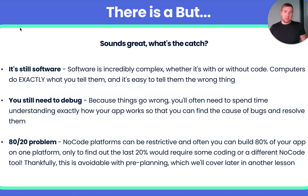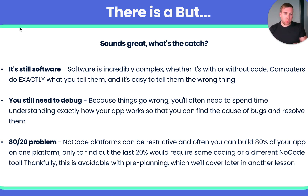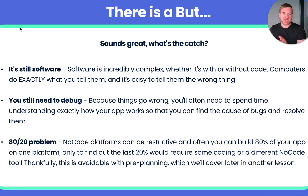Now there is a catch. Even though NoCode takes care of all those things, software is still incredibly complex. Computers will literally do exactly what you tell them — and that's a key phrase to internalise, especially when the computer is doing something you don't expect. The computer has no way of knowing if what you're telling it to do is the wrong thing. You've got to be exact and specific. Whatever you tell the computer to do, it will do, even if that's the wrong thing within the context of your app.